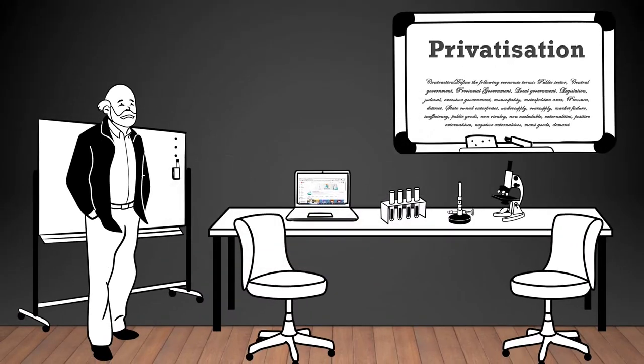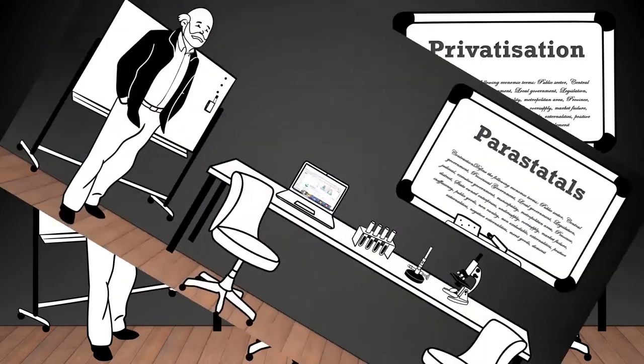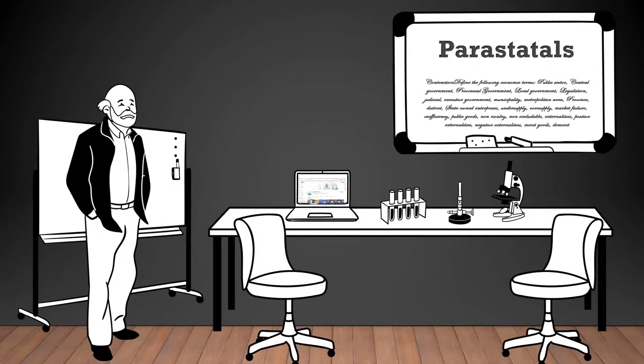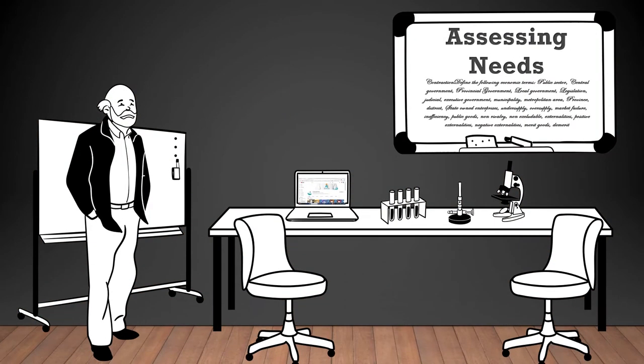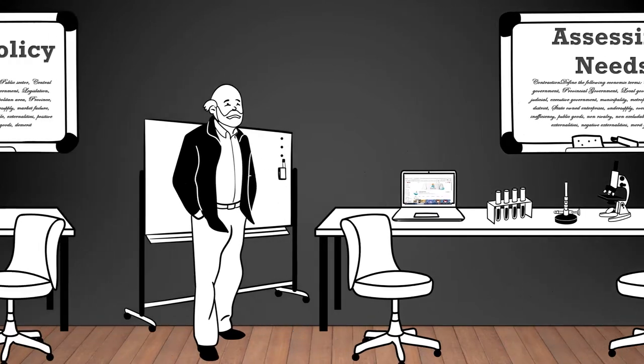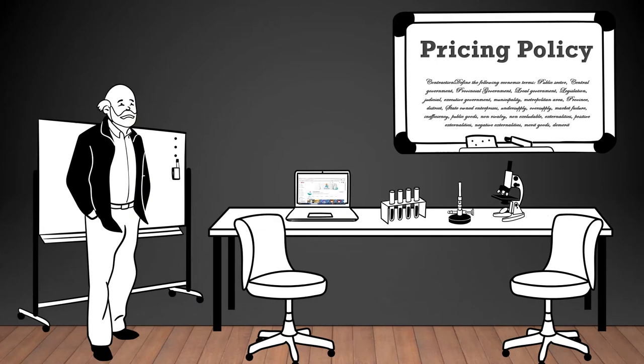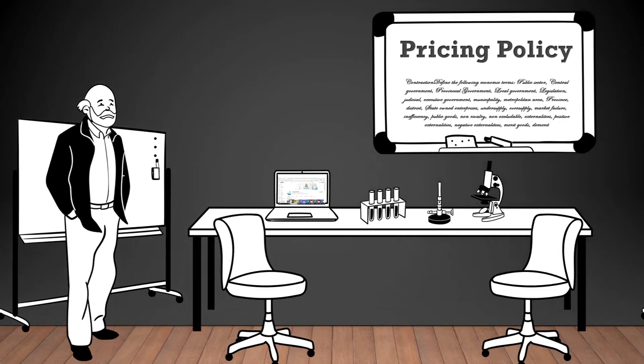Privatization: the process of transferring ownership and control of government-owned entities to private individuals or companies. Parastatals: government-owned companies or agencies that operate in the private sector. Problem of assessing needs: the challenge of accurately determining the actual needs of individuals and society to allocate resources effectively. Pricing policy: the rules and strategies governing the pricing of goods and services, often used by governments to influence market behavior.